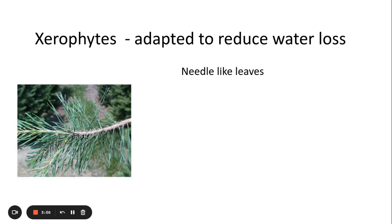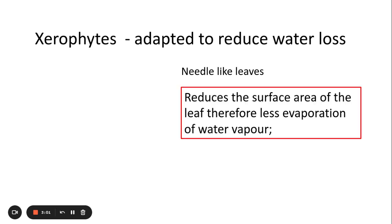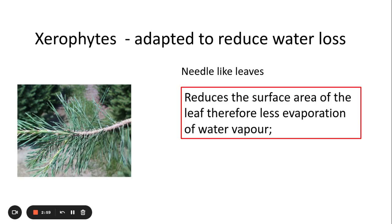The next adaptation is needle-like leaves, and that's for reducing the surface area for evaporation of water. If you think about it, this is what Christmas trees — pine trees — are adapted to be like. That's because they live in such cold environments that they have reduced water availability because the water is ice, so it's more difficult for the trees to take up water. Therefore they reduce evaporation from the leaves by having needle-like leaves.